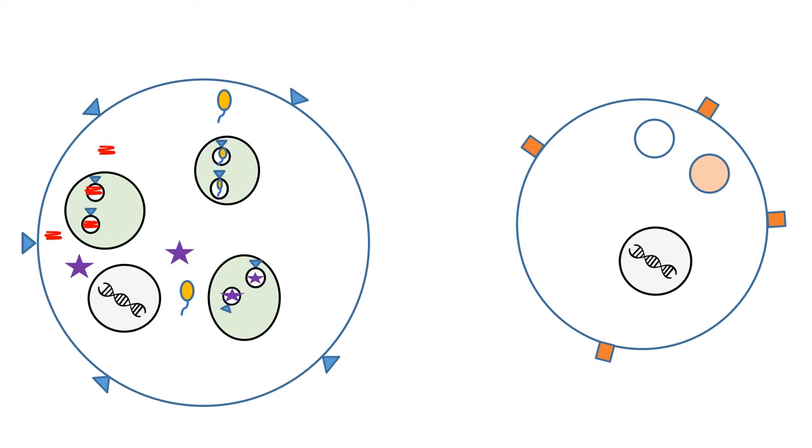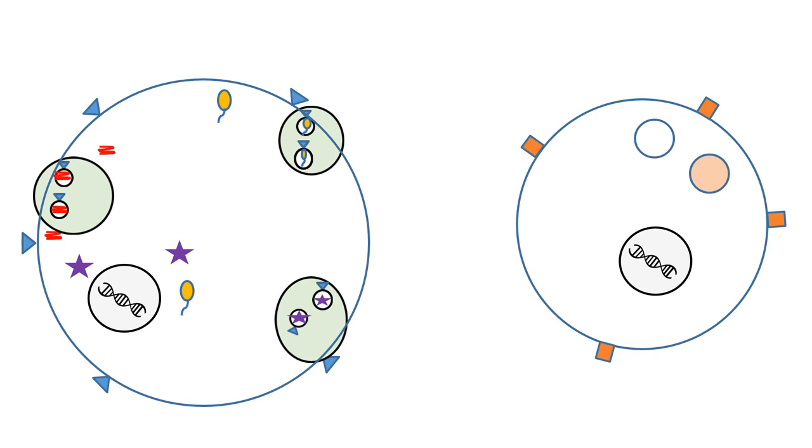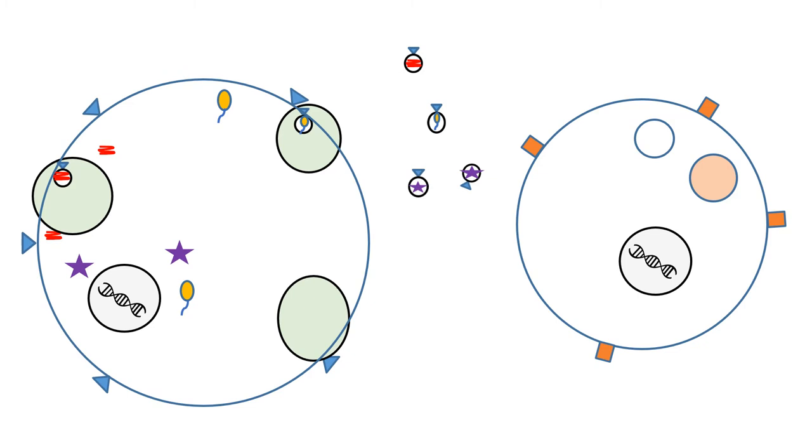Once in the exosome, it's ready to be shipped. The MVB moves to the cell's membrane and attaches to it. Now it pushes the exosome out into the extracellular fluid. This is like sending a truck out onto the highway, or clicking send on an email.